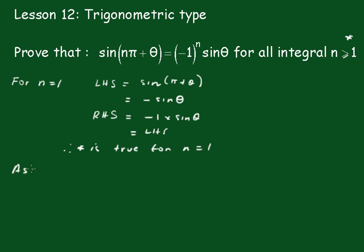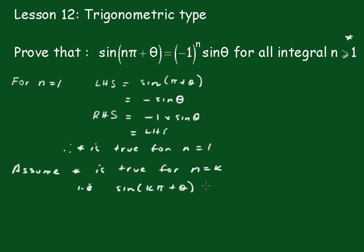Assume the statement is true for n equals k. That is, sin of k pi plus theta equals minus 1 to the k, sin theta.